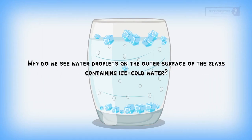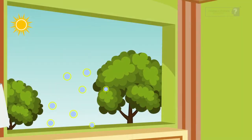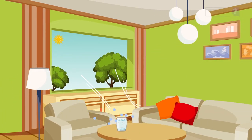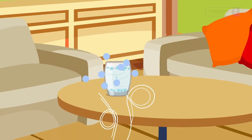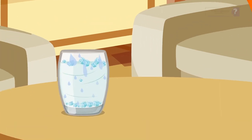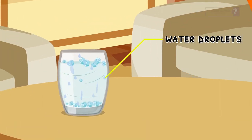Why do we see water droplets on the outer surface of the glass containing ice-cold water? Water vapor in air loses energy on coming in contact with the cold glass of water and gets converted into liquid state, which we see as water droplets on the outer surface of cold glass of water.